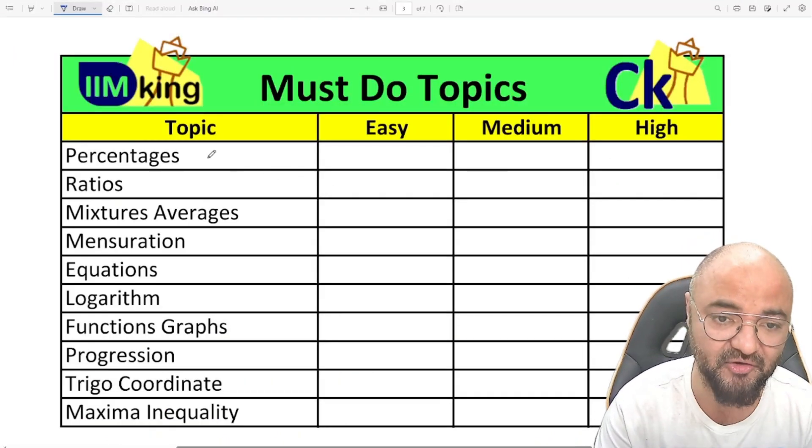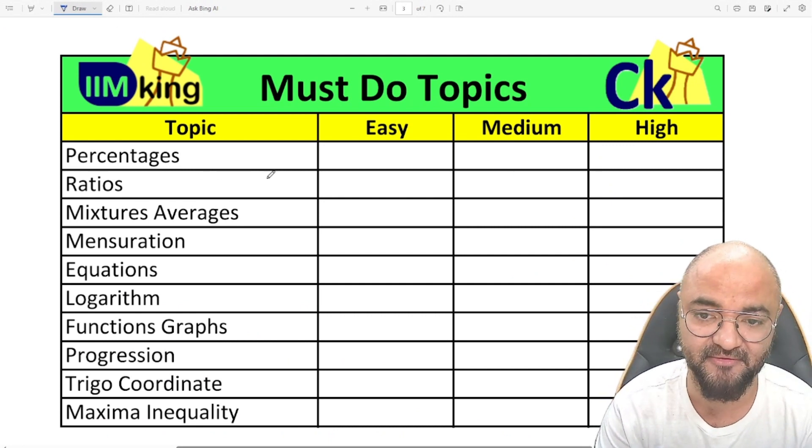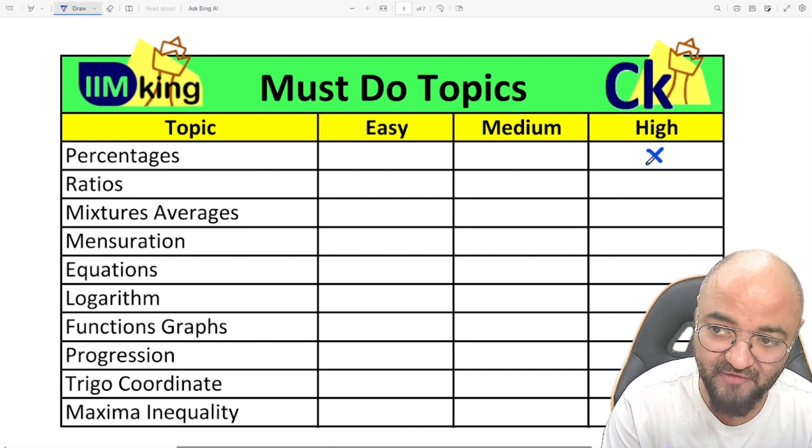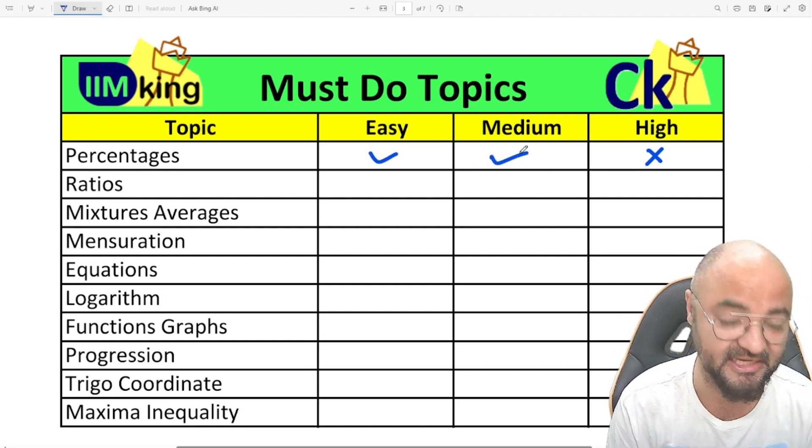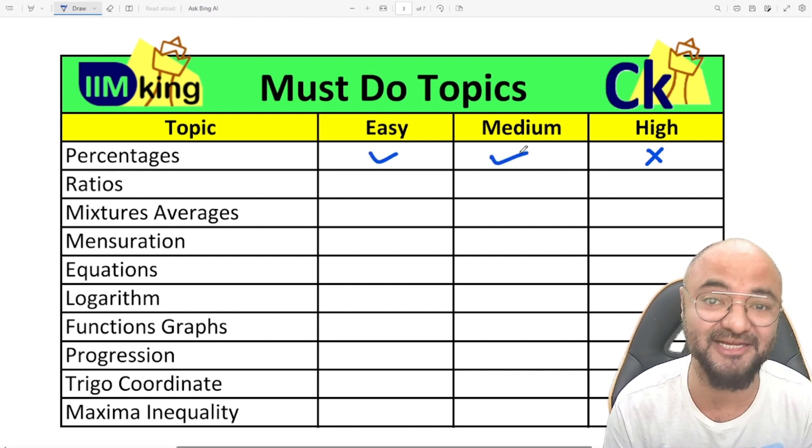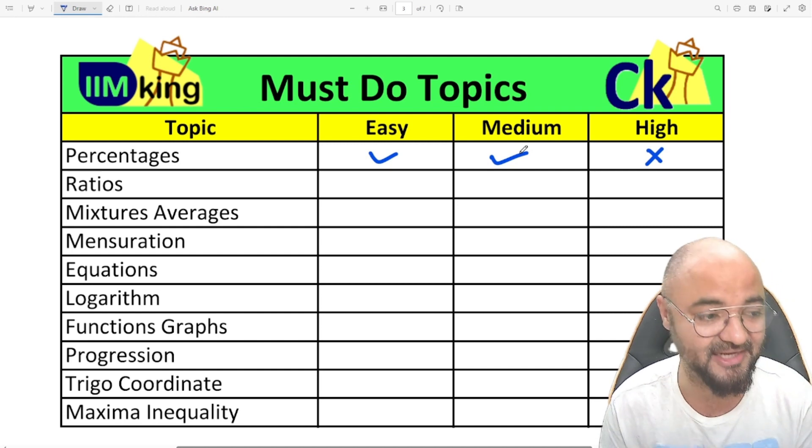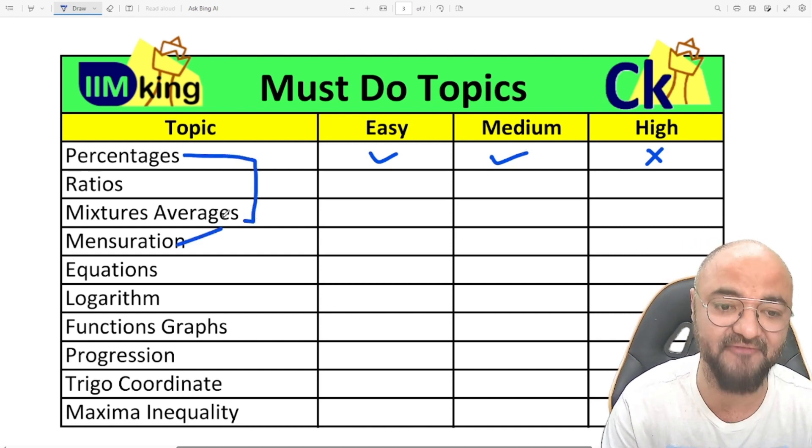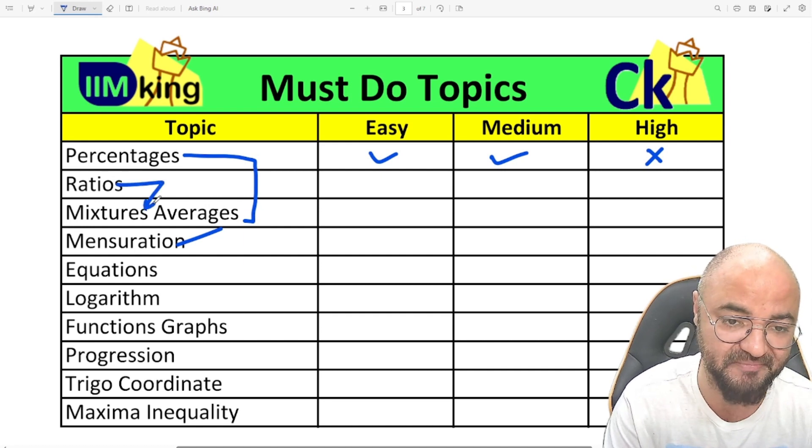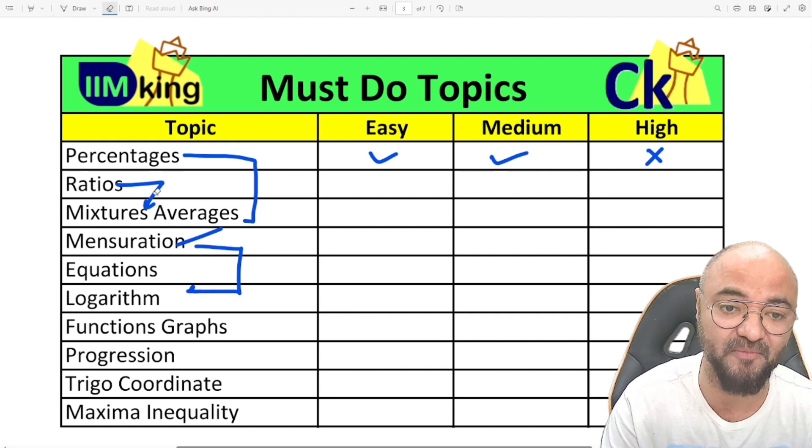Number one topic on the list is percentages. See, you don't need to do very high level questions. At least easy to medium level should be there, because direct percentage questions won't come. If they do, it'll be very high level. What they're going to do is mix percentages with averages, ratios, mixtures, mensuration, logarithm—they're going to mix a couple of topics and give you questions like this.